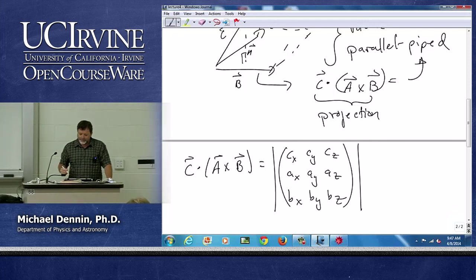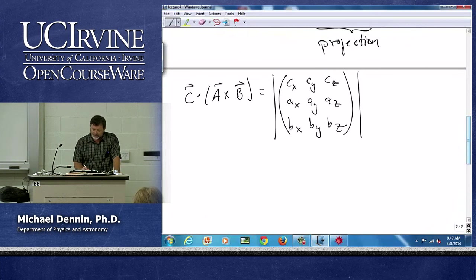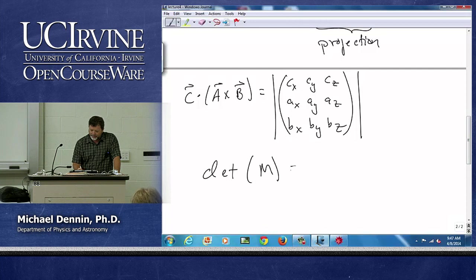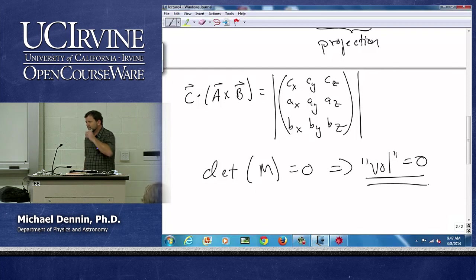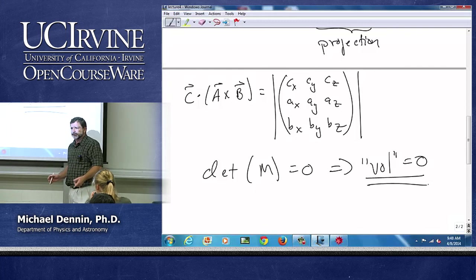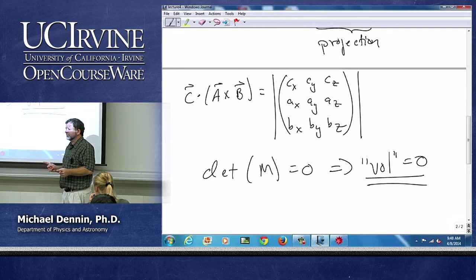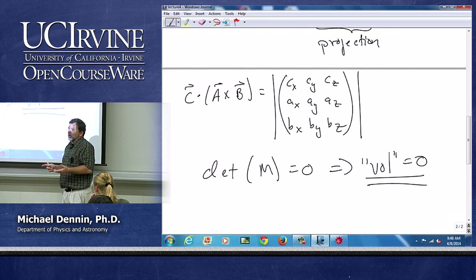And what we see is a fundamental connection that if the determinant of some matrix M equals zero, that implies the volume is zero. And when is the volume going to be zero? When c dot a cross b is zero. Okay, yeah.